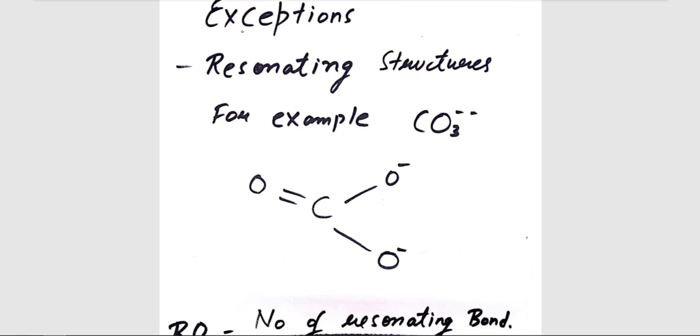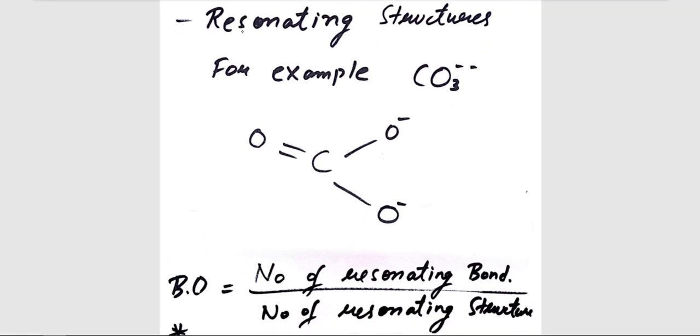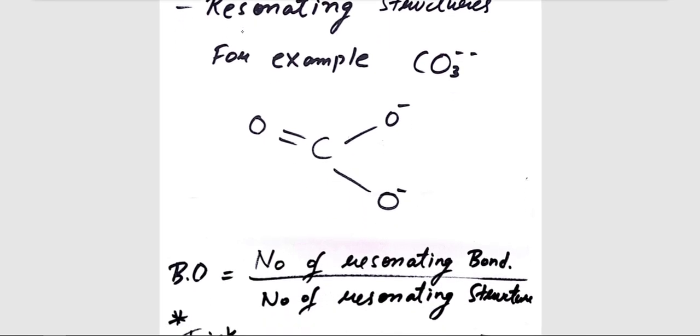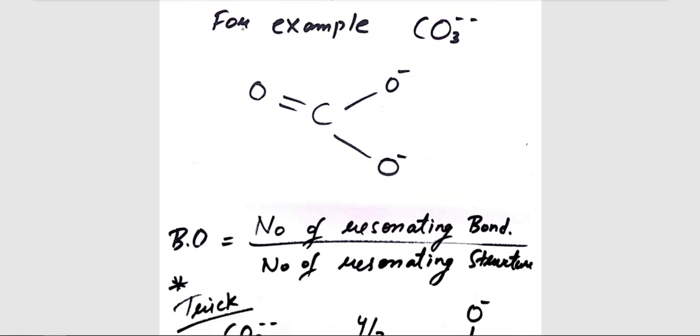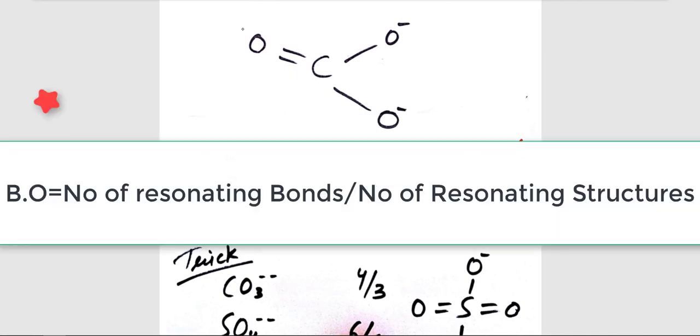So let's start with CO3²⁻, which is a resonance structure. The formula for resonating structures to calculate the bond order is number of resonating bonds divided by the number of resonating structures.